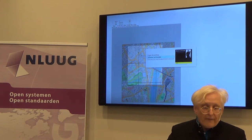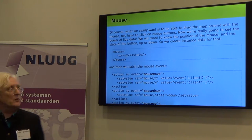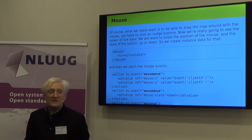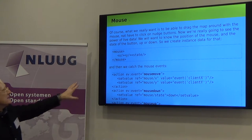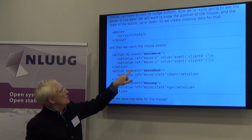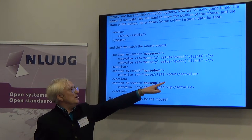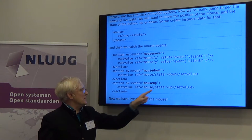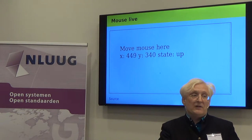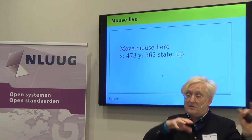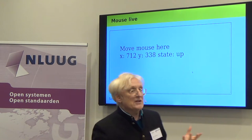Of course, we don't want to click left and right and up and down — we want to use the mouse. So we're going to add a bit of data for the mouse: X and Y coordinates for the mouse and the state of the mouse button, up or down. We catch mouse events — whenever it moves, we just set those values to the current value from the event. If the mouse goes down, we set the state to down; if it goes up, we set it to up. So now we've got live data for the mouse. The moment I move the mouse over this area, we're just watching that live data. All I've said is: catch these things, store them in my live data. And if I click — down, up, down, up — it's just all live data.